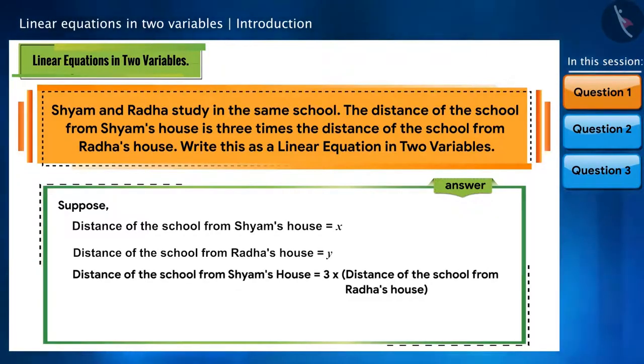We are given that the distance of the school from Shyam's house is three times the distance of the school from Radha's house. That is, x is equal to 3y. And we can write it in its general form as follows.